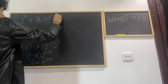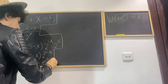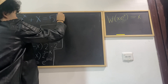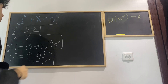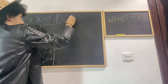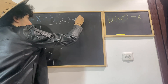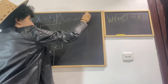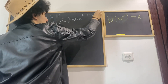Let me divide the board so we can use the right side. Therefore, 2 to the power of 5 equals (5 minus x) multiplied by e to the power of ln 2 multiplied by (5 minus x).